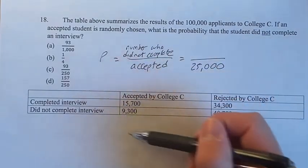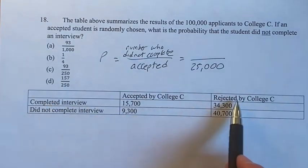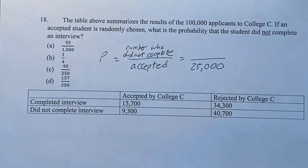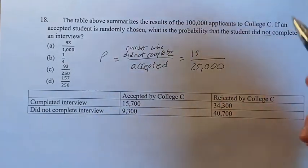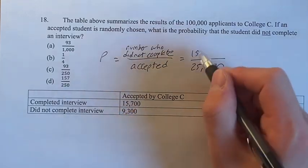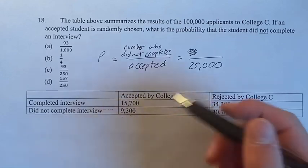Now, of these people, because these are the only people we're looking at, how many of them completed an interview? Well, that's this row. So looking at this column and this row, we see that we're looking for did not complete an interview. So that's this row, 9,300. Did not complete an interview accepted by college C, 9,300.